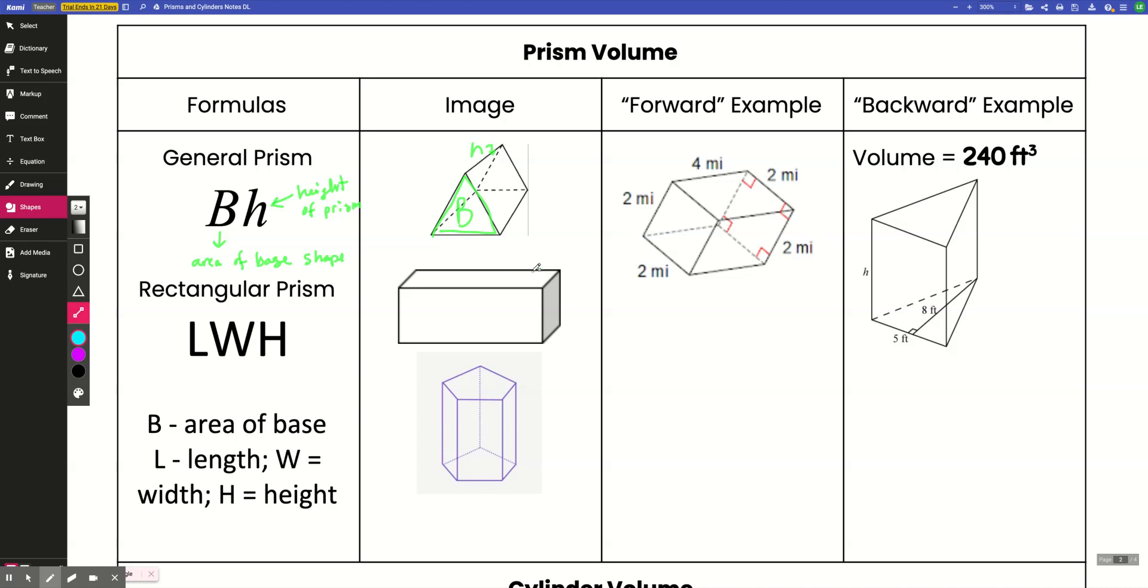For a rectangular prism, there is a special formula that we can use, but it's still essentially the same as this general one. Because see how you have an H here and then length times width is just the area of a rectangle. That's the area of the base shape. But this one I'm sure you've seen before. Volume of a rectangular prism, length times width times height.